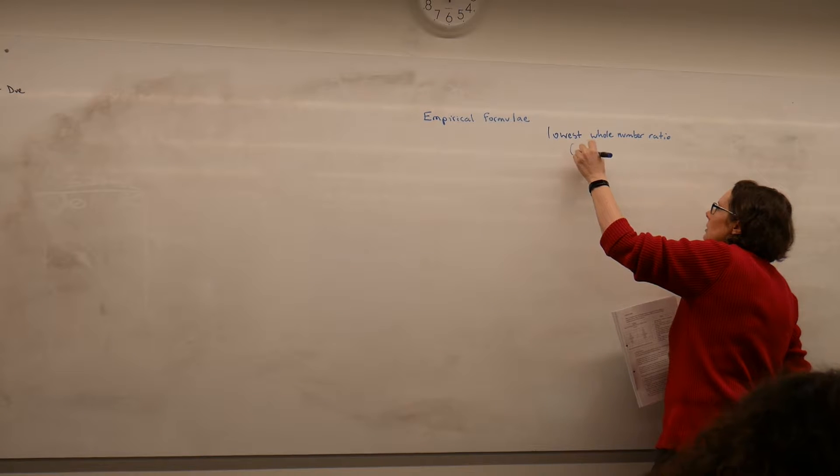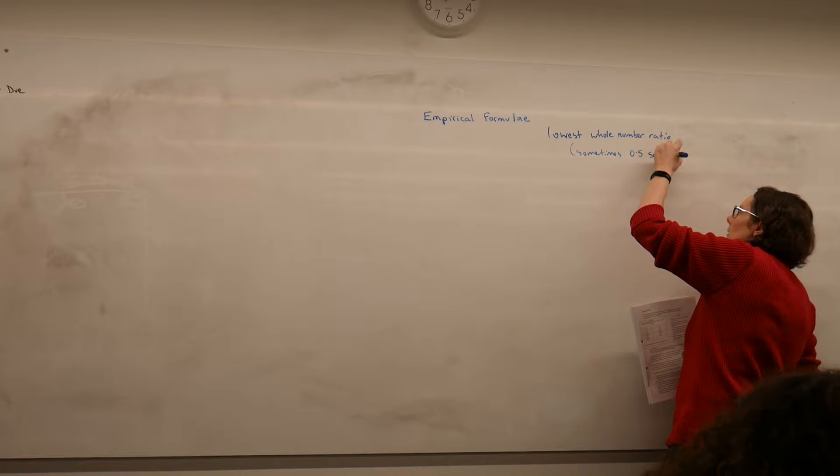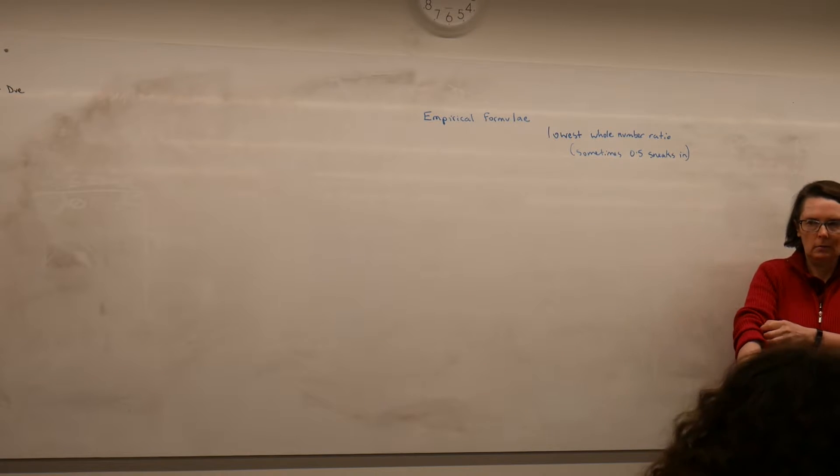Now sometimes, 0.5 is an example. Basically we're saying this is the smallest whole number ratio for the constituents of that compound.